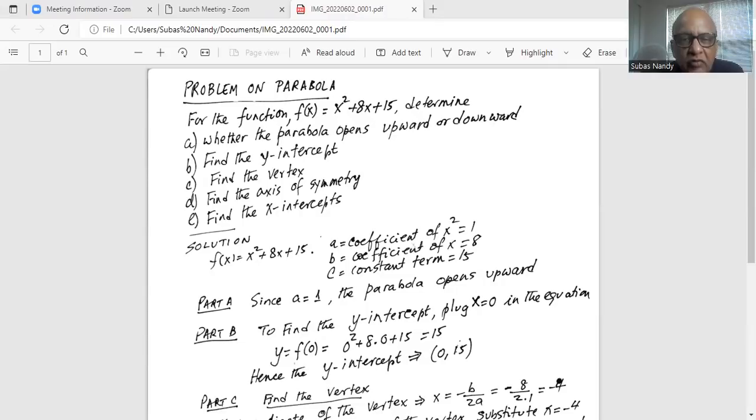Next question, find the y-intercept. To find the y-intercept, we will substitute x equal to 0 because on the y-axis, x is always equal to 0 in the equation. So the function at 0 is equal to 0 squared plus 8 times 0 plus 15 equal to 15. So the y-value is 15 when x is 0. Hence the y-intercept coordinates are (0, 15). 0 is the x-coordinate, y-coordinate is 15.